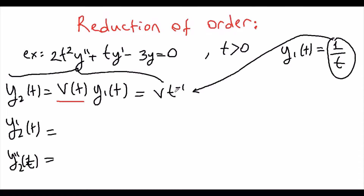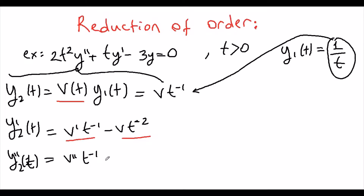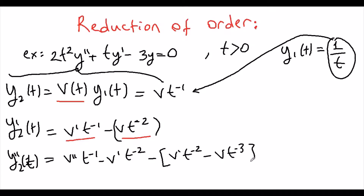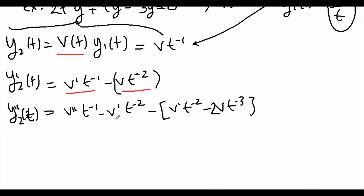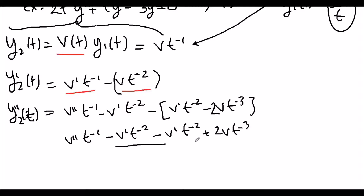Now we take the second derivative, applying the product rule twice. We get y2'' = v''·t^(-1) - v'·t^(-2) - (v'·t^(-2) - 2v·t^(-3)). Distributing the negative sign gives y2'' = v''·t^(-1) - 2v'·t^(-2) + 2v·t^(-3). Combine like terms where applicable.